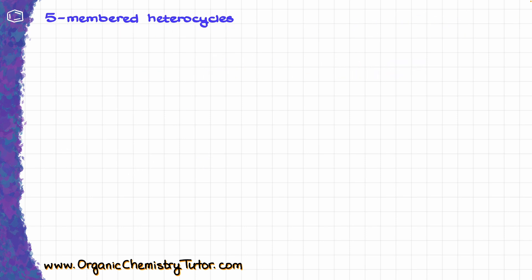When it comes to electrophilic aromatic substitution in heterocycles, you are most typically going to be seeing 5- and 6-membered rings. When it comes to 5-membered rings, the most common ones are going to be pyrrole, furan, and thiophene. I will collectively show all of them as this 5-membered ring with an X, where X is my heteroatom.